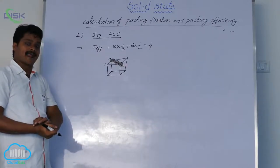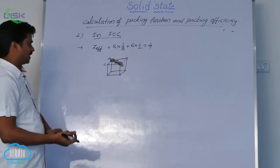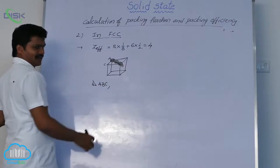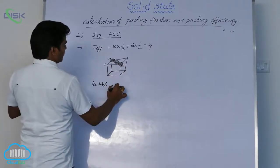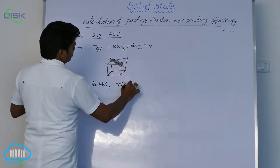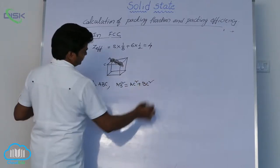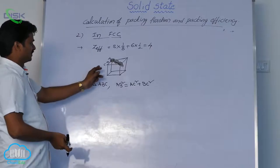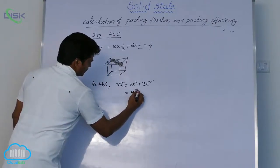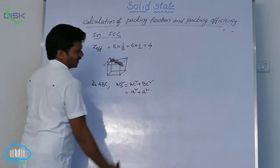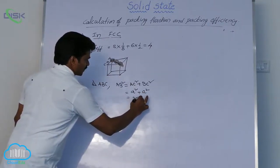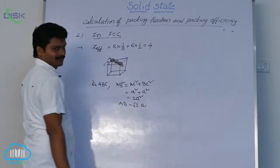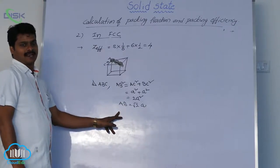ABC is a right-angle triangle. AB square equals AC square plus BC square. This AC is nothing but edge length A, and DC is also of edge length A. So AB square equals A square plus A square, that means 2A square. Therefore AB equals root of 2A square, which means AB equals root 2 times A.